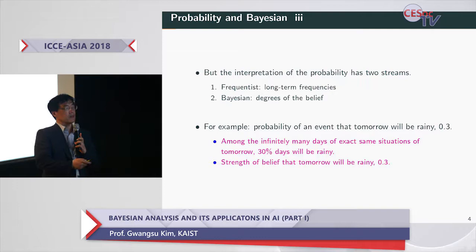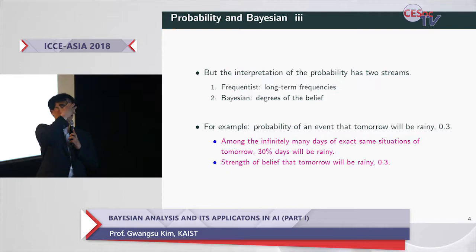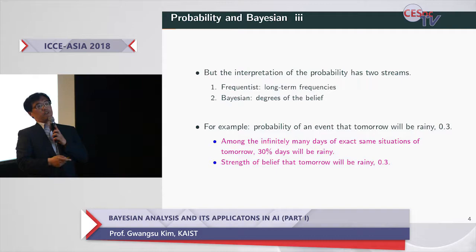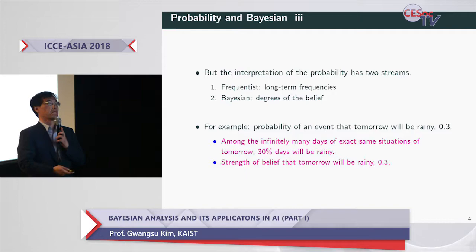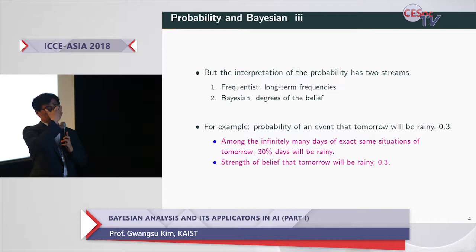The Bayesian interpretation is that degrees of belief constitute probability. For example, consider the probability of the event that tomorrow will be raining: 0.3. The frequentist interprets this as: among infinitely many days of exact same situations as tomorrow, 30% of days will be raining. This requires repetition. The Bayesian interpretation is simply the strength of belief that tomorrow will be raining is 0.3. So the interpretations of probability are different.